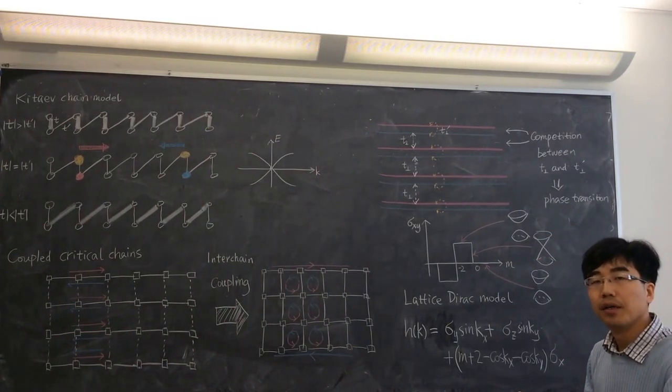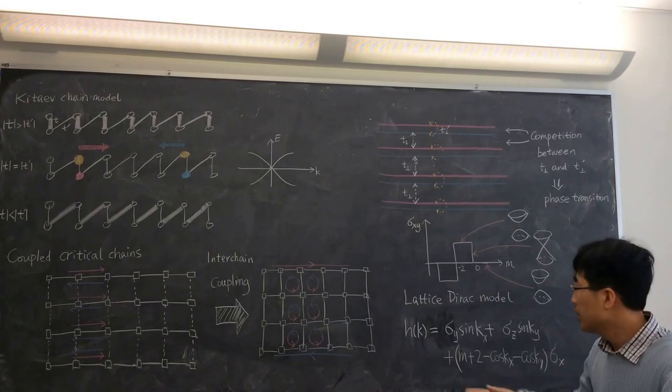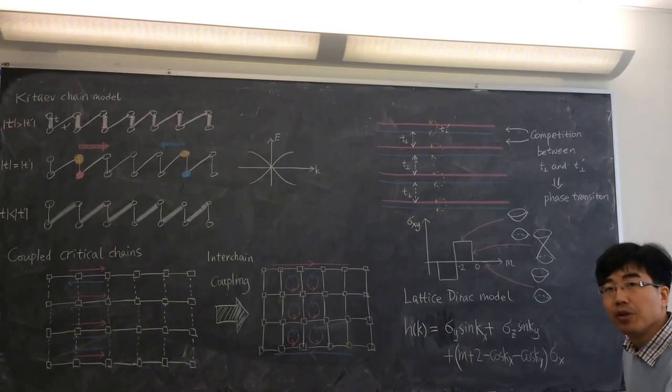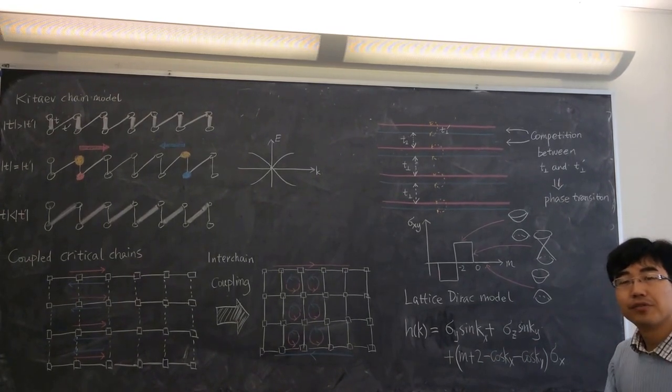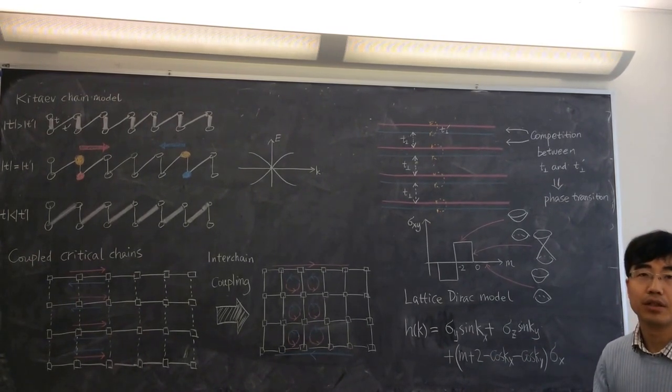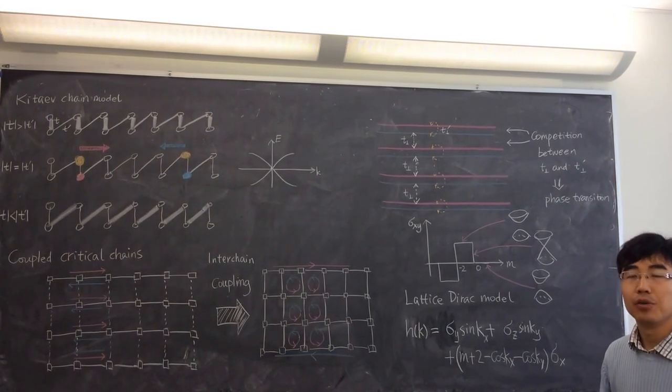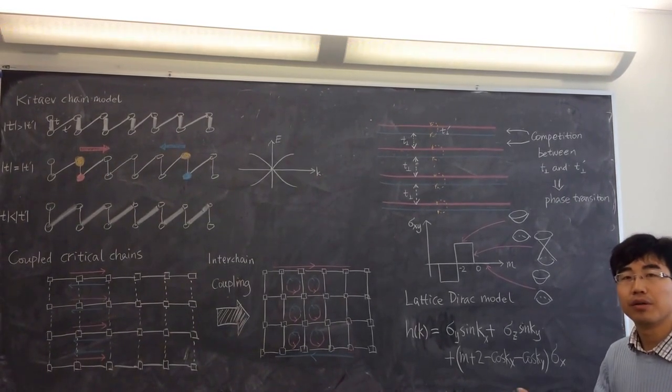The Hamiltonian looks like this, where you write using Pauli matrices, and you have this sine k terms, which are like lattice version of these linear k terms, the linear in partial derivative terms in the Dirac model. And you have these cosine k terms, which is a regularized mass.